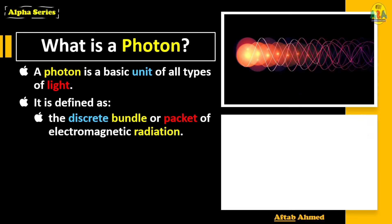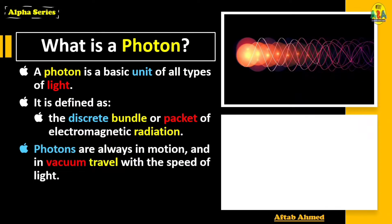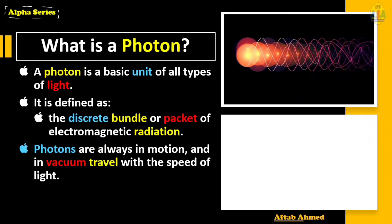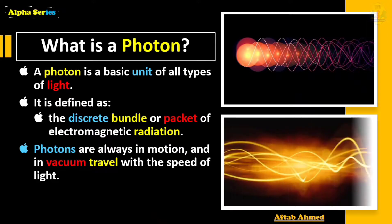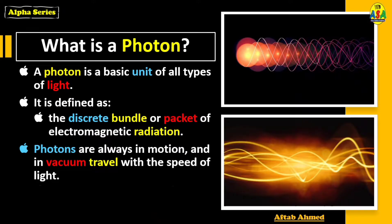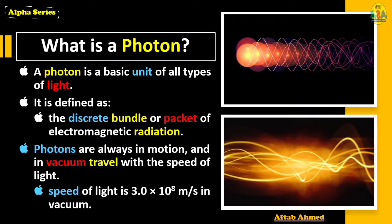A photon is defined as the discrete bundle, quantum, or packet of electromagnetic radiation or energy. Photons are never at rest — they are always in motion, and in vacuum they travel with the speed of light, which is about 3.0 × 10⁸ meters per second.